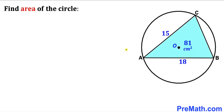Welcome to pre-math. In this video we have got a blue triangle ABC fully inscribed in a circle with center O, such that the area of this blue triangle ABC is 81 centimeter square. Its side length AB is 18 and its side length AC is 15 centimeter. Our task is to calculate the area of this circle.